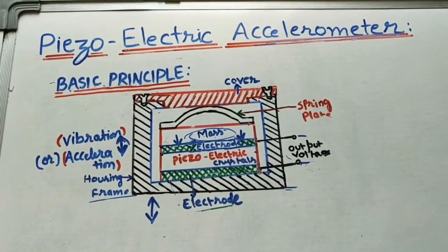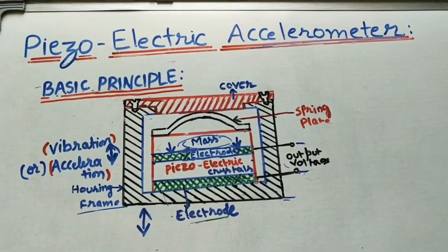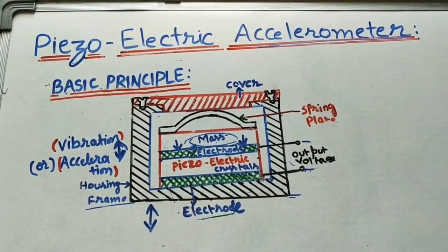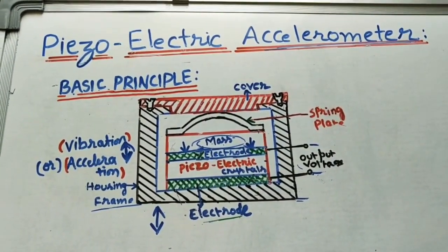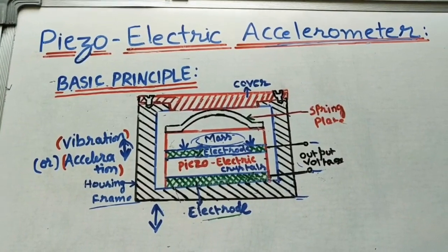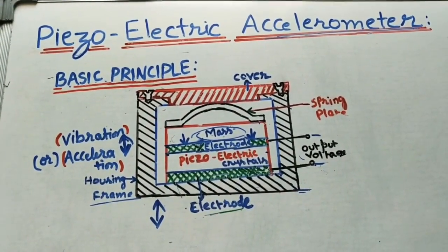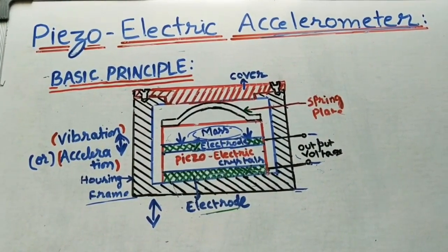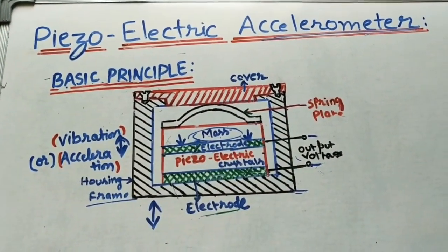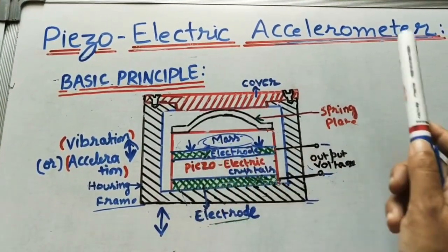Let us discuss the piezoelectric accelerometer. This accelerometer will find the acceleration or vibrations of a given motor, machine, or engine — how many vibrations the engine is making during running. If an engine or motor or vehicle has more vibrations, it will not function properly for a long time, and sound pollution is also more. For finding the vibrations or accelerations, we are using different types of accelerometers. This one is called a piezoelectric accelerometer because we are using the piezoelectric effect for finding the vibrations.